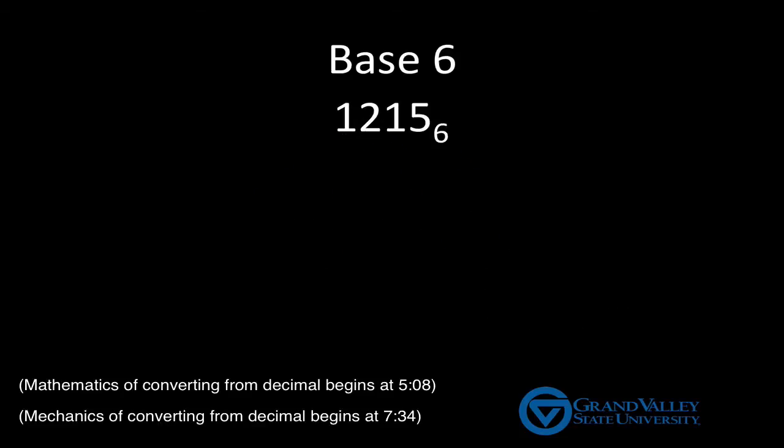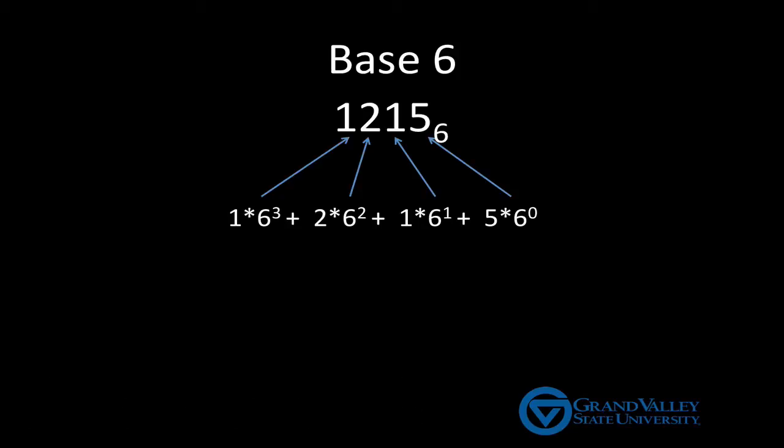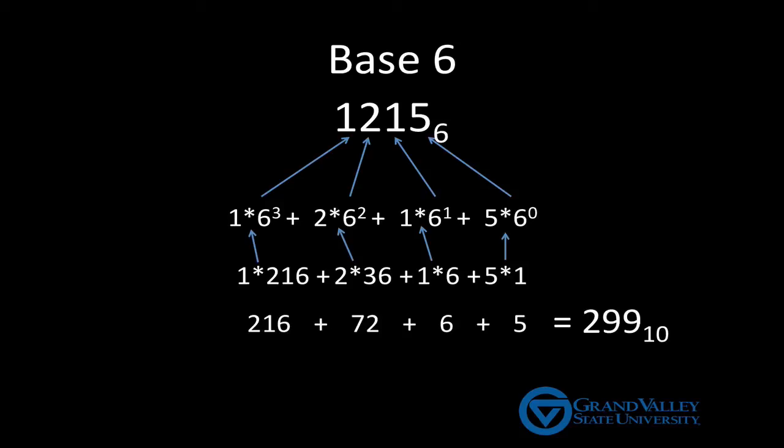Let's do another example. How about 1, 2, 1, 5 base 6? This would be 5 times 6 to the 0 power plus 1 times 6 to the first power plus 2 times 6 squared plus 1 times 6 cubed. Expand the powers of 6 and we get 5 times 1 plus 1 times 6 plus 2 times 36 plus 1 times 216, which we can multiply out, add up, and get 299.